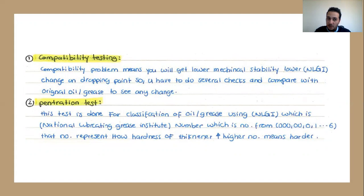The second type of test is called penetration test. This test is done for classification of oil and grease using the NLGI, which is the National Lubricating Grease Institute. The numbers for this test result is like triple zero, double zero, zero, zero one up to six.